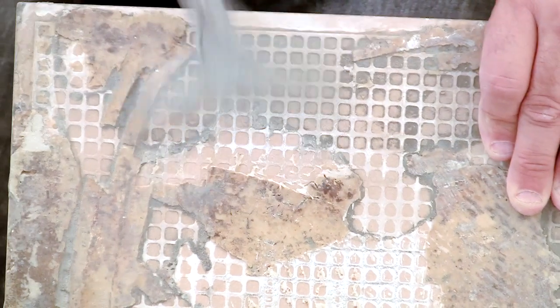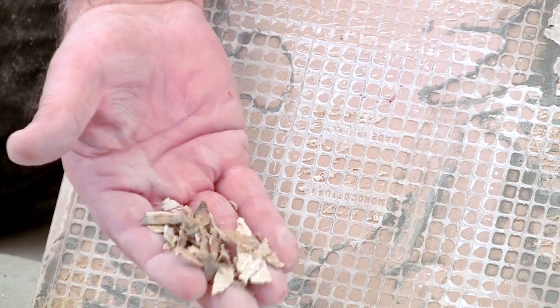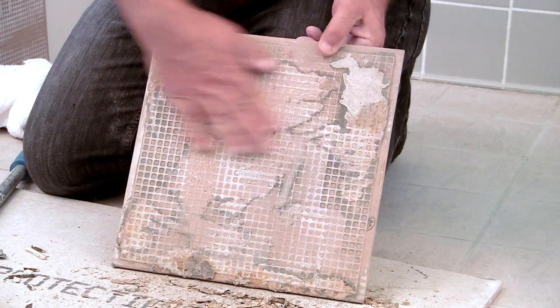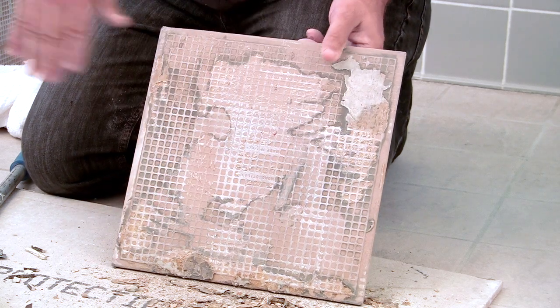Now that we've removed the glue from the back of the tile and we've removed the grout from the tile, we've got a tile that is almost brand new. So it's a matter of just reinstalling it into the area that you desire to reuse this tile for.